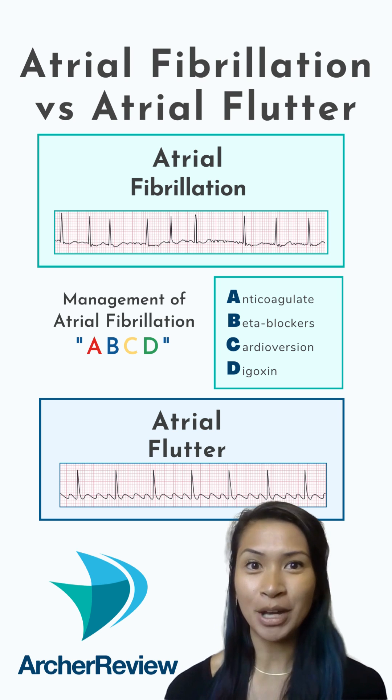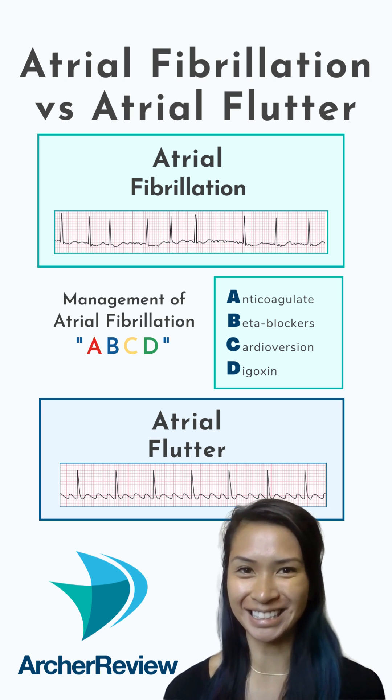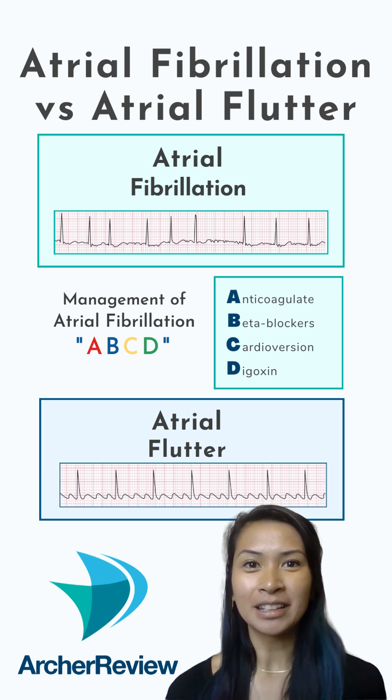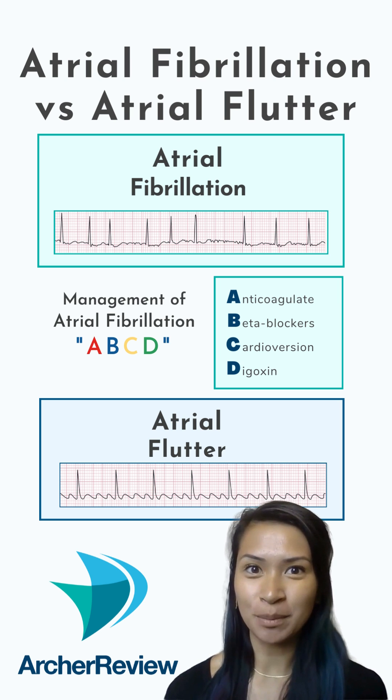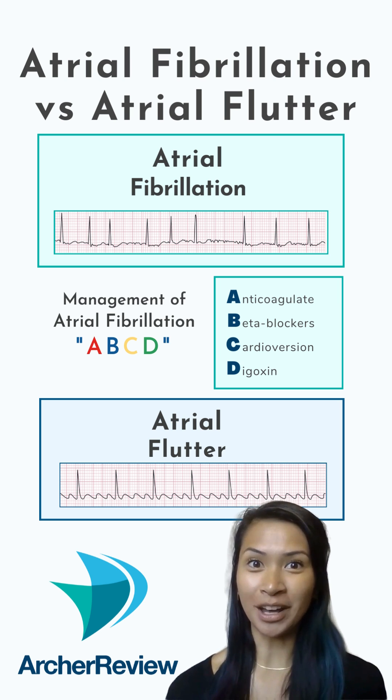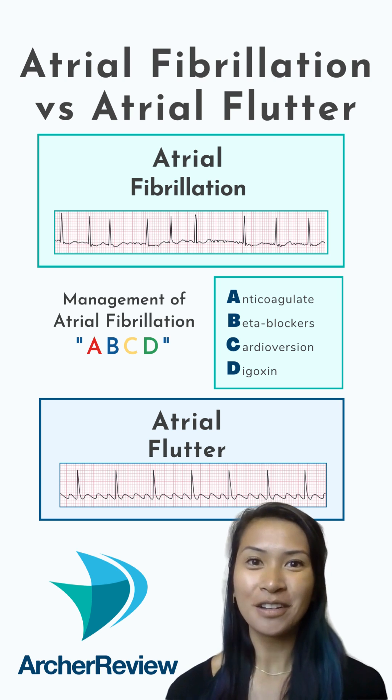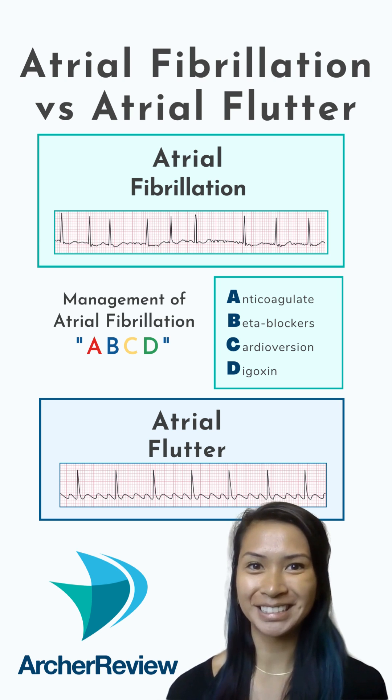We treat this rhythm by looking at our ABCDs. The sawtooth-looking P waves that we see in atrial flutter are called flutter waves.